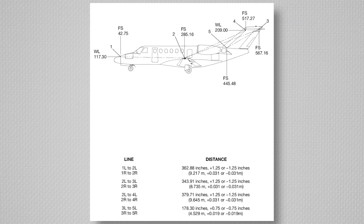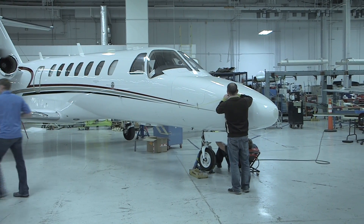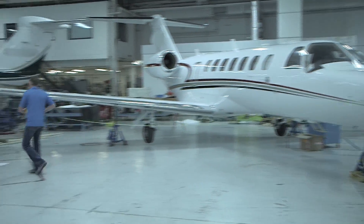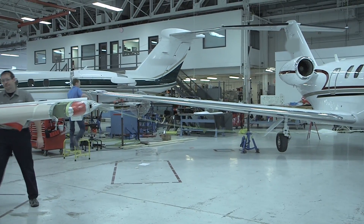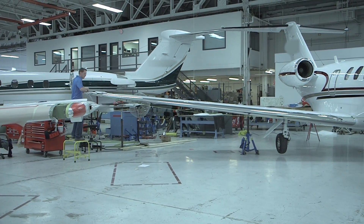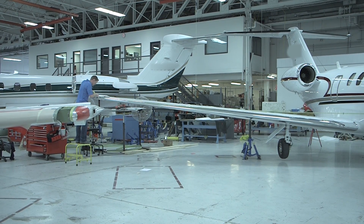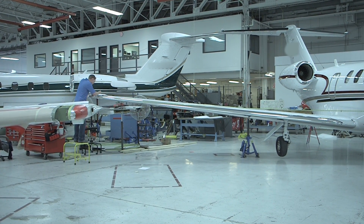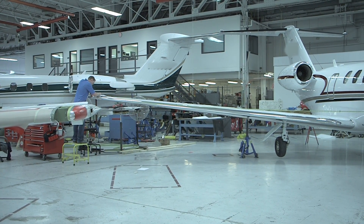You will notice that the tolerance in the difference of measurements is fairly tolerant. This is common across all models with symmetry checkpoints. If your aircraft does not have this section in the Structural Repair Manual, contact Team Structures for guidance on symmetry checkpoints. The theory will remain the same in finding two symmetrical points on each side of the aircraft and measuring to determine what difference exists. Team Structures can then review the data for you.